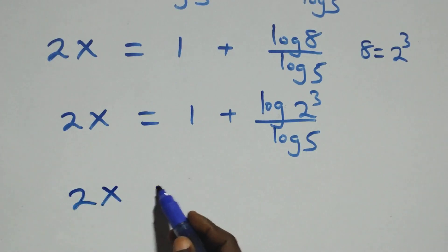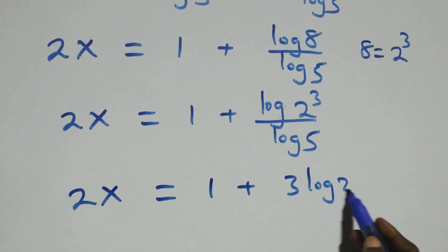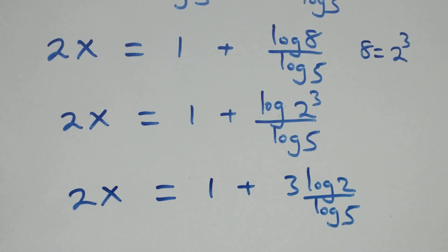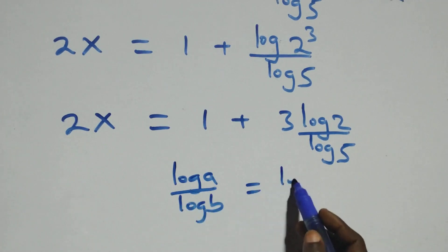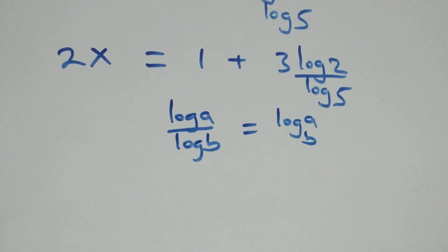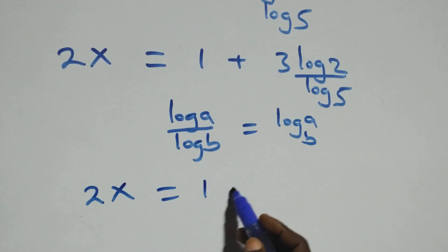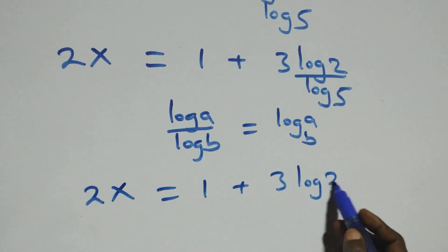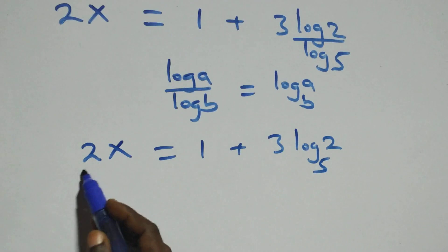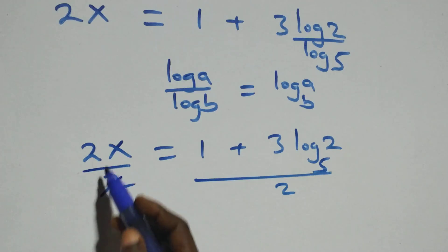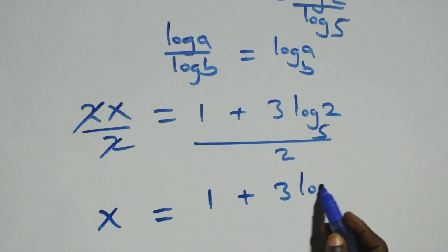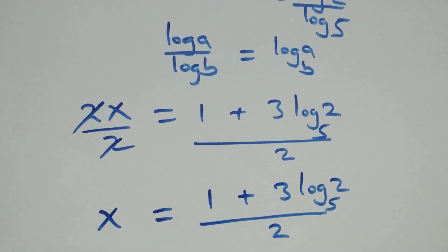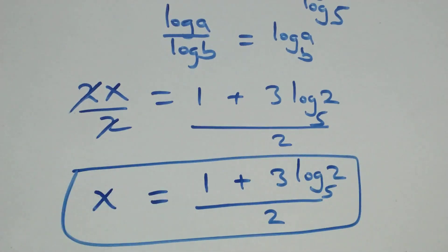We have 2x equals 1 plus 3 log 2 over log 5. Then we apply the change of base rule: log a over log b is the same thing as log a to base b. So what we have becomes 2x equals 1 plus 3 log₅2. Then we divide both sides by 2 — the 2s cancel — and we have x equals (1 plus 3 log₅2) all over 2.